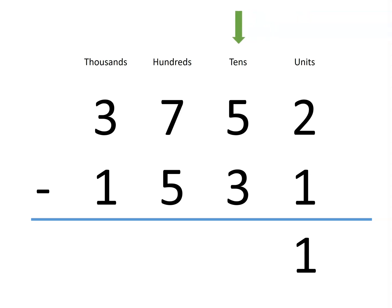Now we have 5 tens, but we want to take away 3 tens. That leaves us with 2 tens. In the hundreds column, we have 7 hundreds, but we want to take away 5 of them. That leaves us with 2 hundreds.